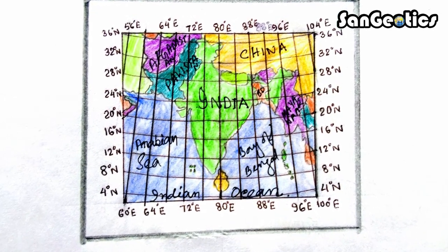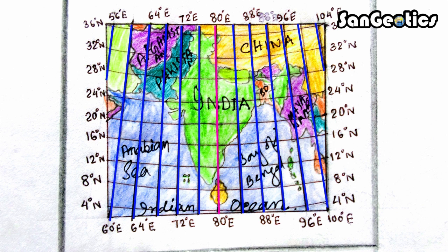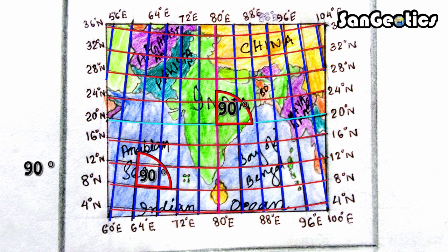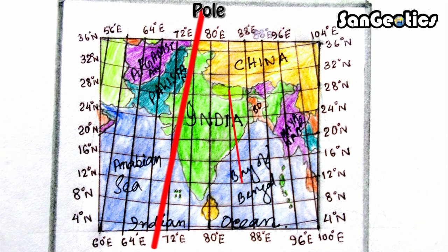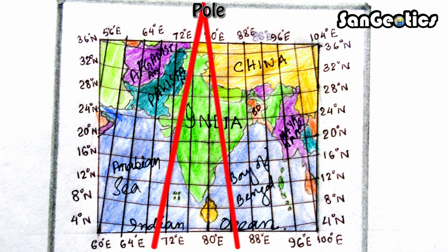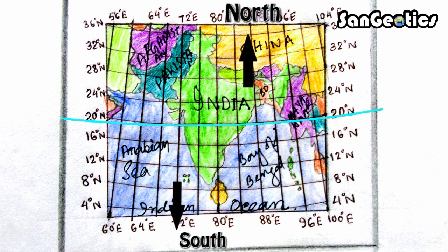Now we discuss the properties of simple conical projection. First, it is a non-perspective projection and easy to construct. Second, the parallels of latitude are arcs of concentric circles and are equally spaced. Third, the meridians are straight lines and intersect the parallels at right angles. Fourth, distances along meridians are fairly accurate. Fifth, there is convergence of meridians towards the poles. Sixth, the scale becomes distorted north and south of the standard parallel. The projection is neither equal area nor orthomorphic, so it is called an aphylactic projection.